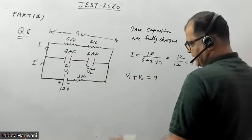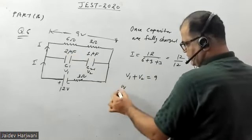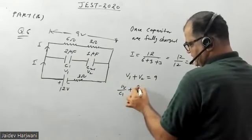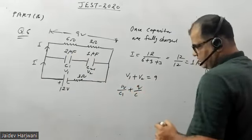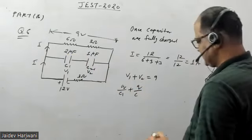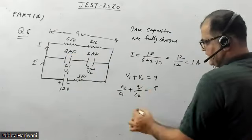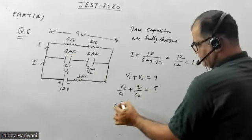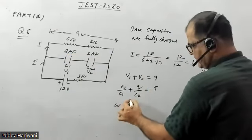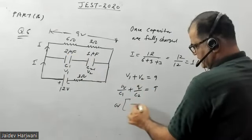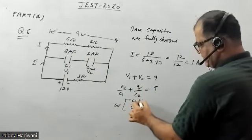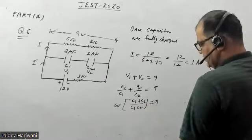v1 is q upon c1 because they are in series, so same charge will be stored in each capacitor. This will be q upon c1 plus q upon c2 equals 9. We can write this as q times c1c2 upon c1 plus c2 equals 9.